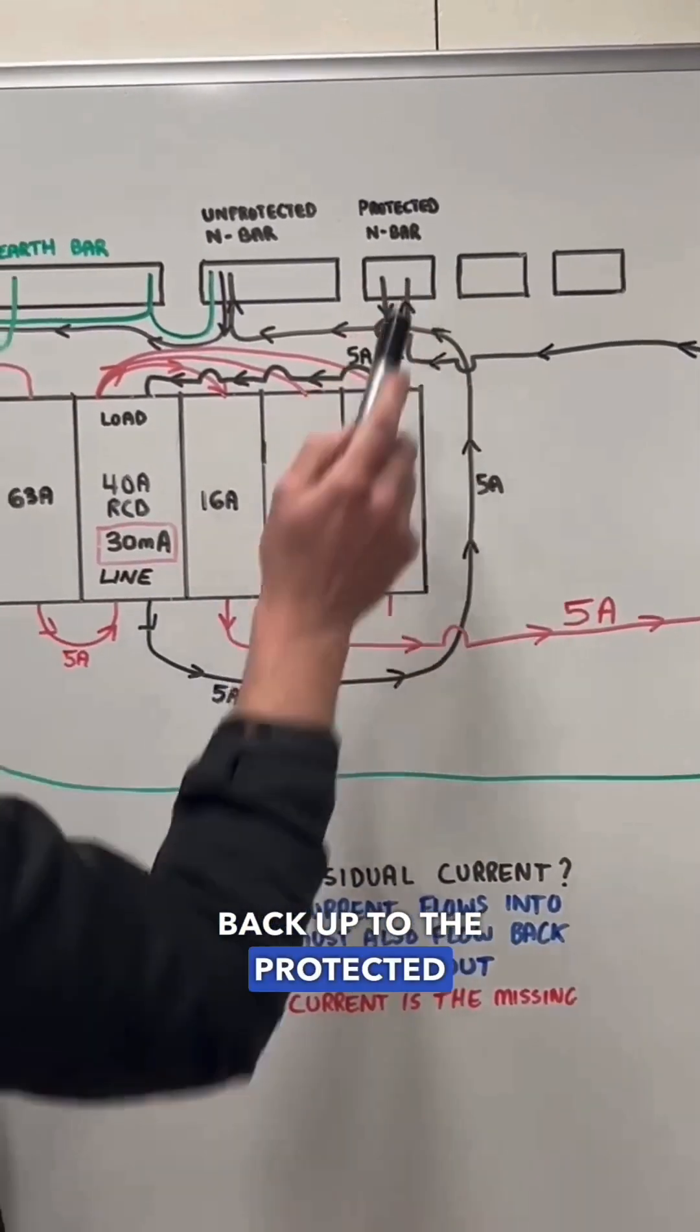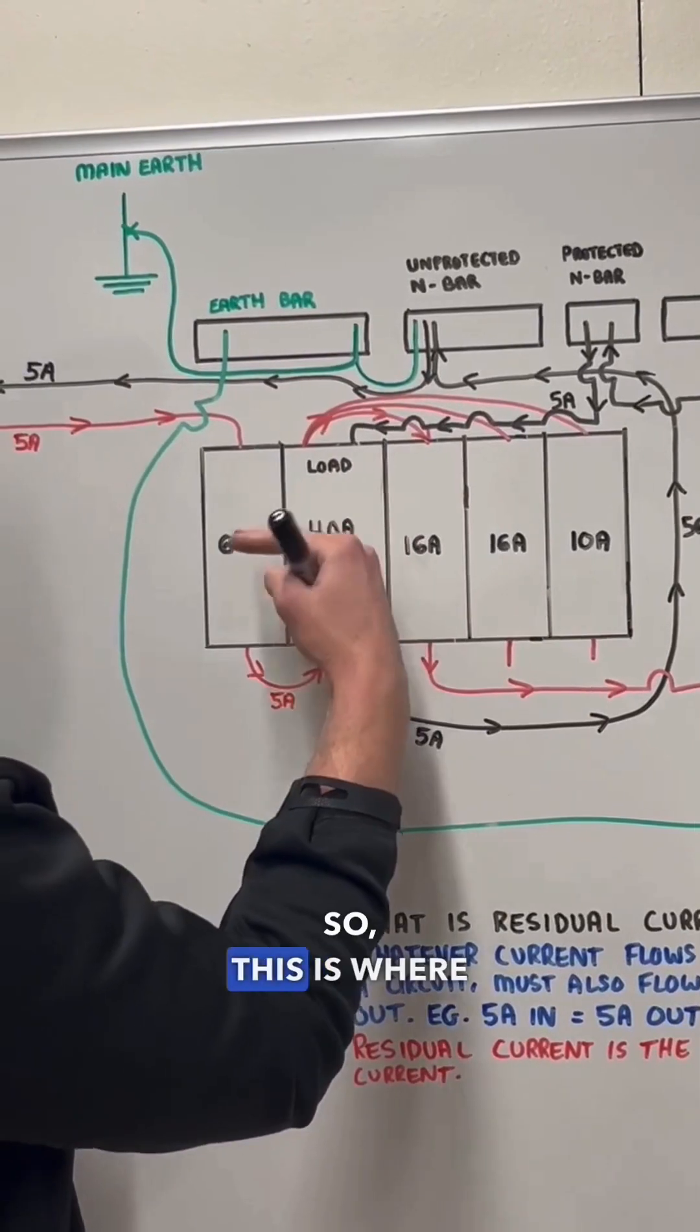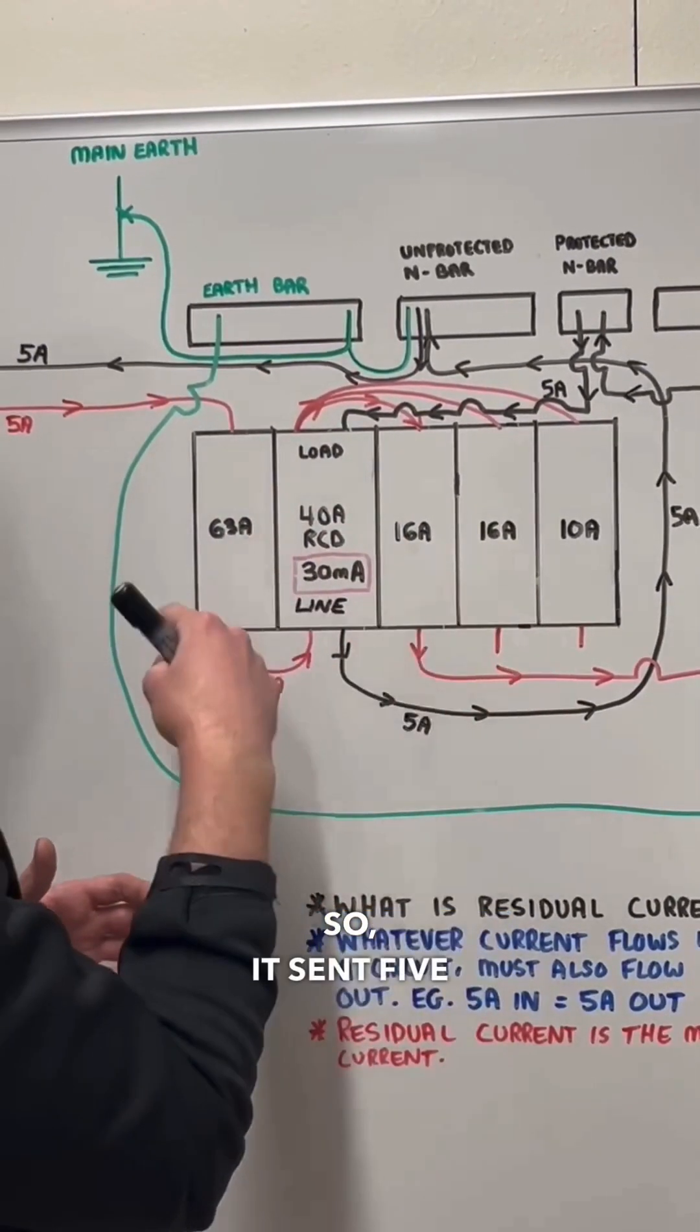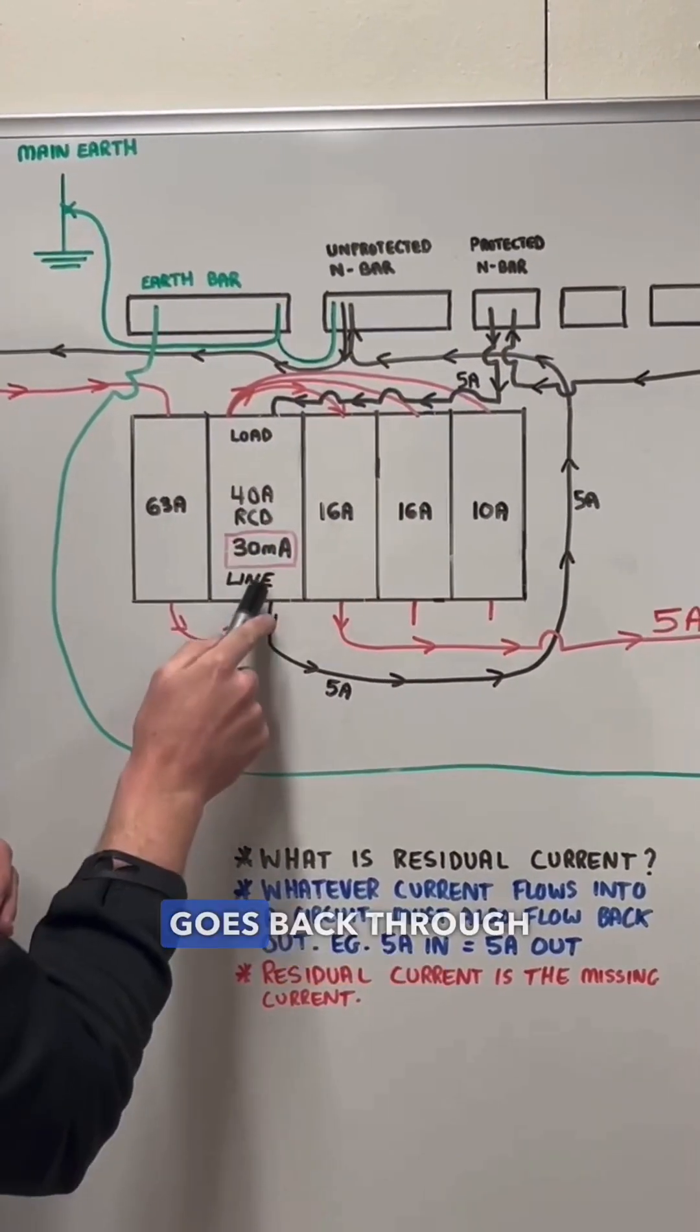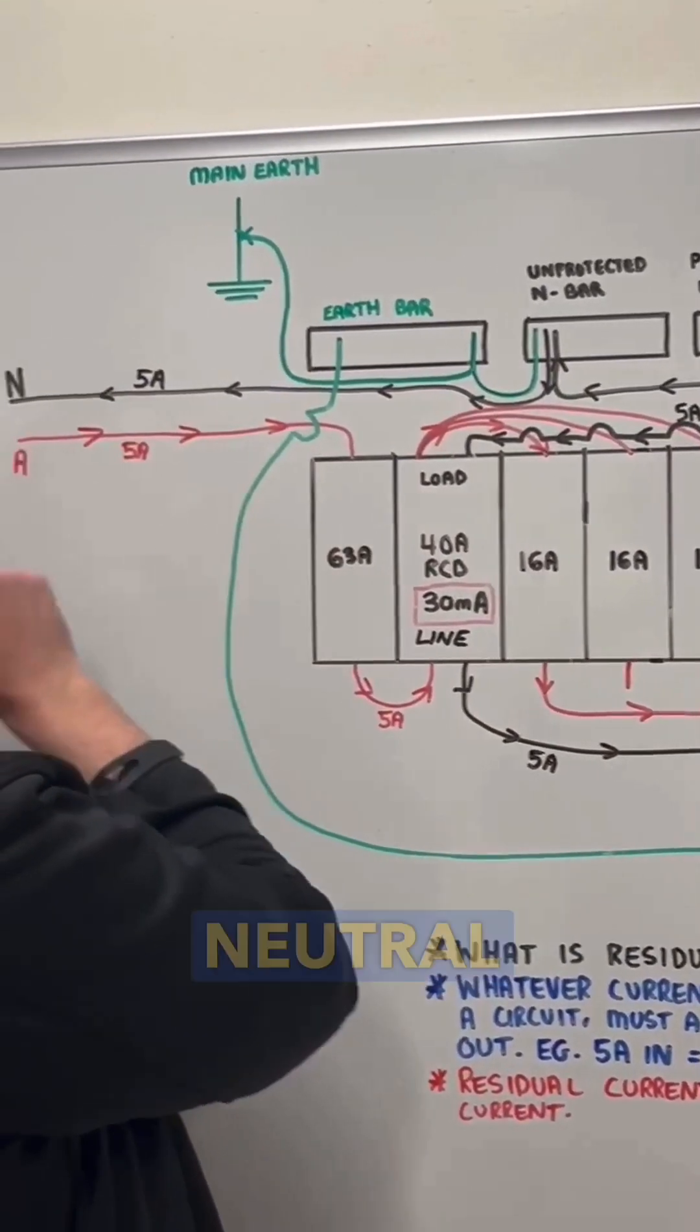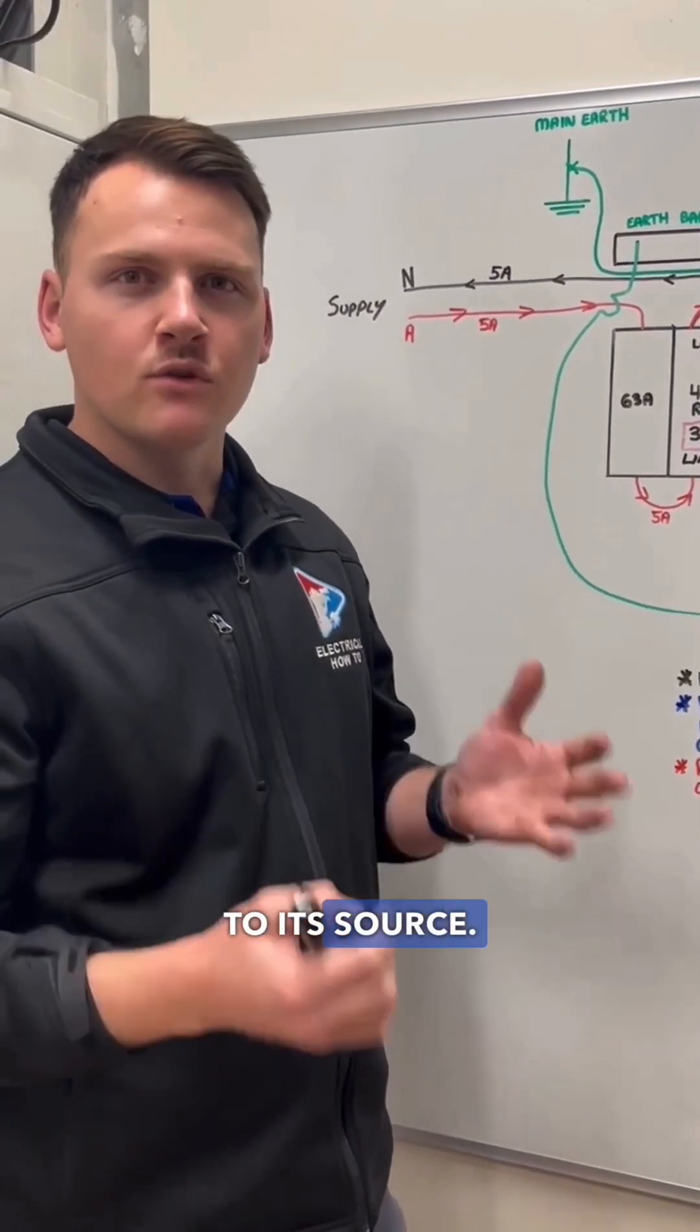Back up to the protected neutral bar and then back to the load side of the RCD. So this is where the RCDs are actually looking for an imbalancing current. It's sent 5 amps out and it's got 5 amps coming back in so it's happy, it's not going to trip off. That 5 amps goes back through the line side, back up to your unprotected neutral bar and then back through your main neutral, back to supply. You've just got to remember current's always trying to get back to its source.